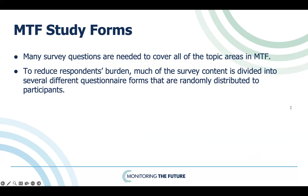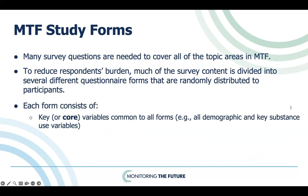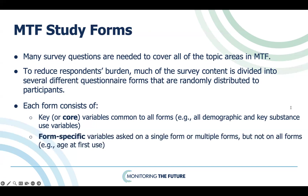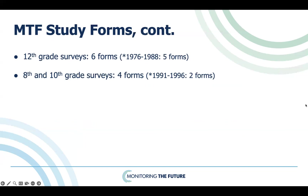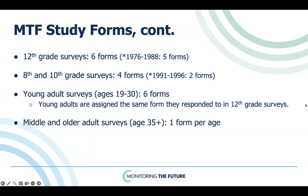MTF questionnaires include a variety of topics with many survey questions. To help make the surveys more manageable, much of the content is divided into several different questionnaire forms and randomly distributed to participants. Each form consists of core variables common to all forms, such as demographic variables and key substance use variables. Form-specific variables are those asked on single or multiple forms, but not on all forms. The 12th grade surveys started with five forms, and in 1989 one additional form was added. The 8th and 10th grades started with two forms in 1991, and two more were added in 1997. As of 2024, the 12th grade surveys include six forms, and the 8th and 10th grade surveys include four forms. For young adult surveys, there are six forms, and respondents are given the same form they completed in 12th grade. Beginning at age 35, one form is distributed for each age.